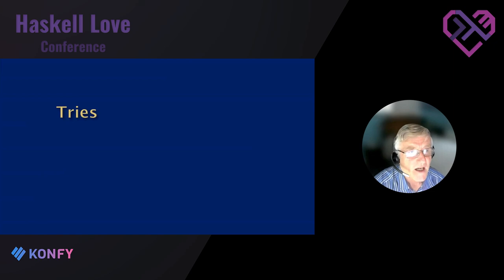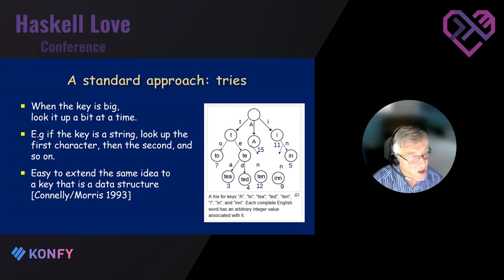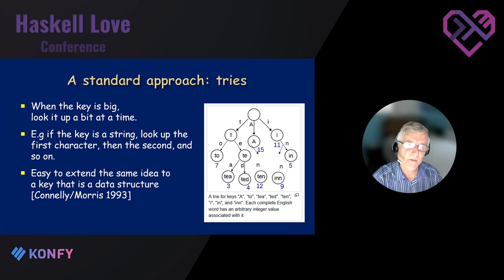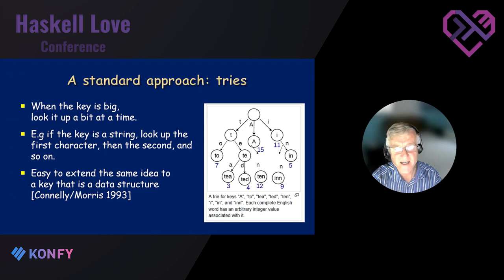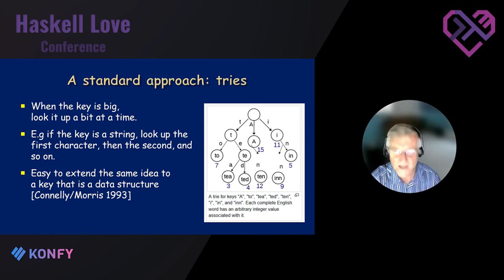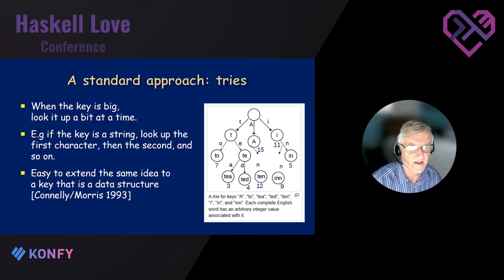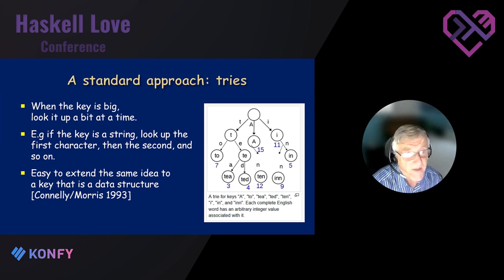The standard way to tackle the straightforward lookup problem is to use a trie. The idea is: when you've got a big key, look it up a little bit at a time. For a string, look up the first character, then the second, then the third. In a trie containing keys like 'a', 'to', 'ted', 'ten', at the root you look up the first character; if it's 't' go down that branch, then look up the second character, and rapidly find the right answer.